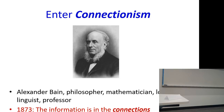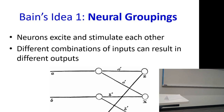Bain came up with this really cool idea where he said that all of the information stored in the brain is actually stored in the connections. And he came up with the idea that depending on the connections, you decide how the thing operates. I can have a single network with a fixed set of connections, and based on how the connections are formed, the network can produce different outputs for different inputs.